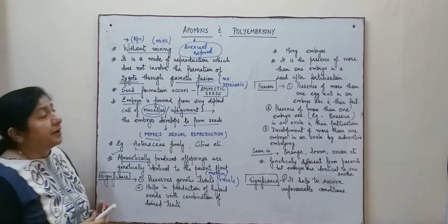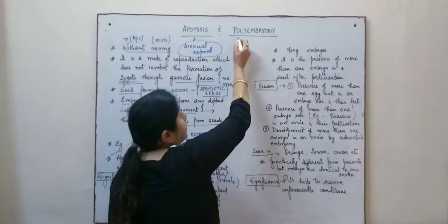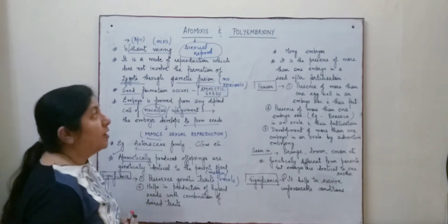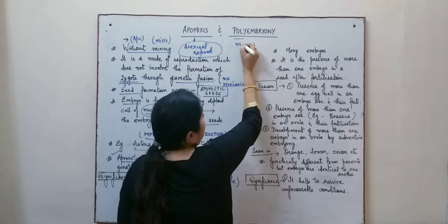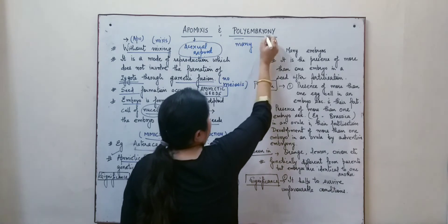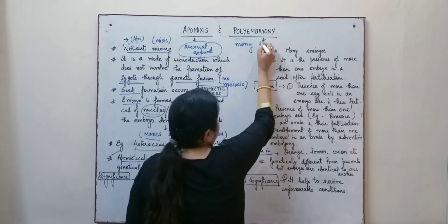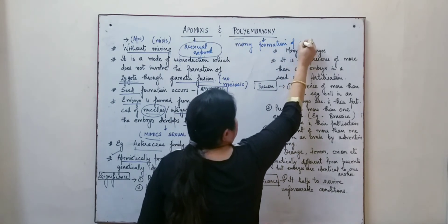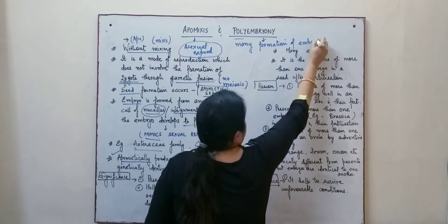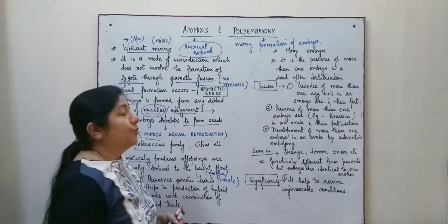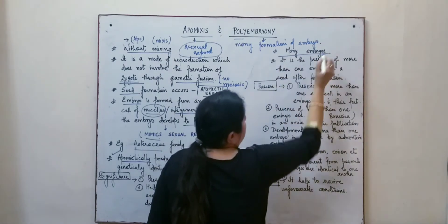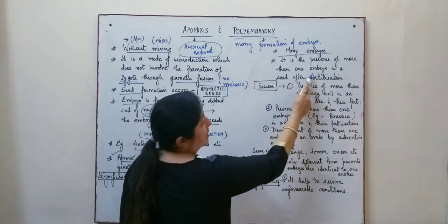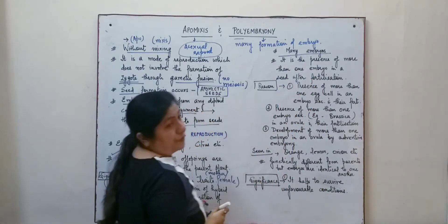Coming to another important point — polyembryony. This is another feature which happens during the reproduction of plants. 'Poly' means many and 'embryony' means formation of embryo. So polyembryony means there is formation of many embryos. It is the presence of more than one embryo in the seed after fertilization.